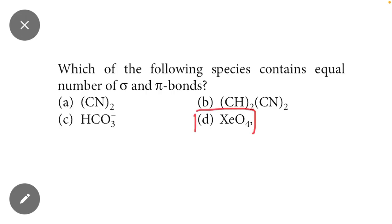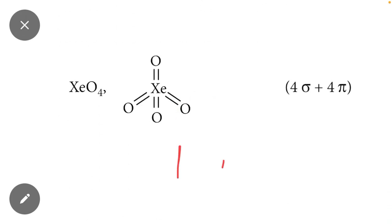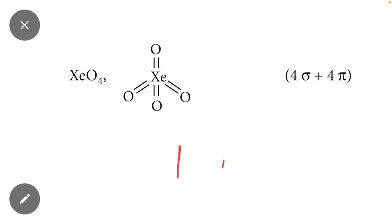The option D of this question is the correct option because the structure of XeO4 shows that the number of sigma bond and pi bond are equal. Here you can see that the structure of XeO4.